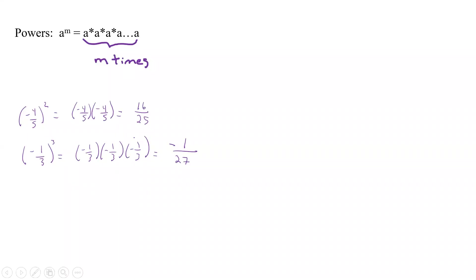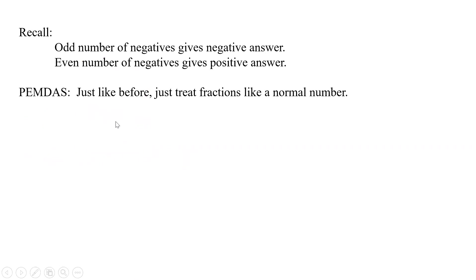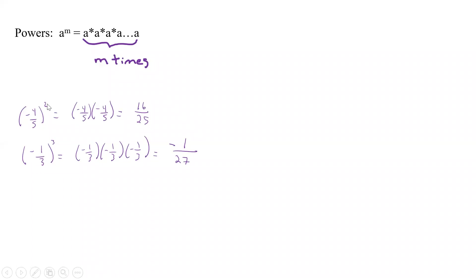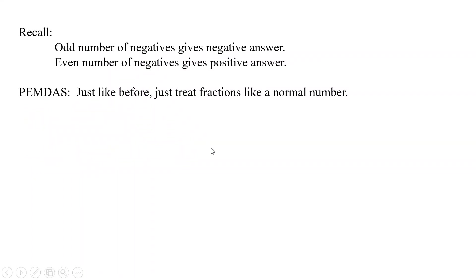We're going to have to remember the following: an odd number of negatives gives a negative answer, and an even number of negatives gives a positive answer. Here we had an even number, so we get a positive answer; we had an odd number, so we got a negative answer. PEMDAS is going to work just like before, except now we're going to have fractions instead of just numbers, but we still follow the order of operations.